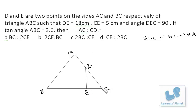Now angle DEC is 90 degrees, so this angle is 90 degrees as given. DE is 18 cm and CE is 5 cm. Now this is a right angle triangle.